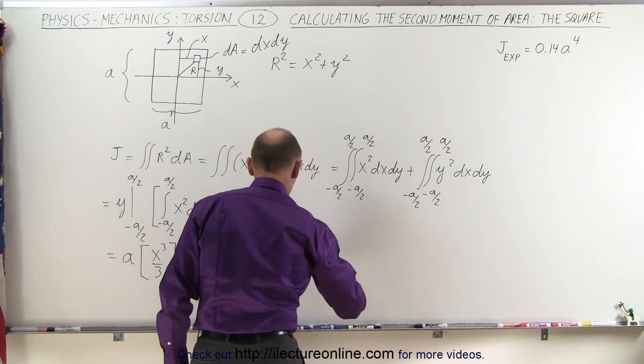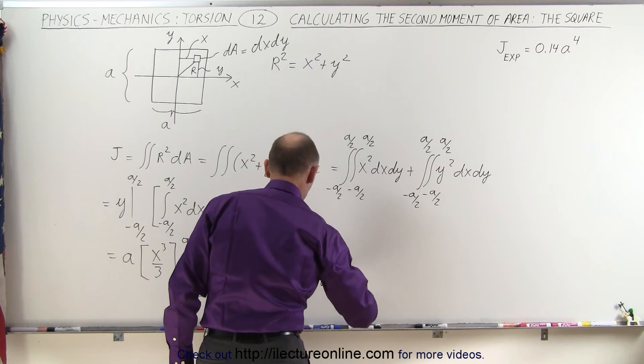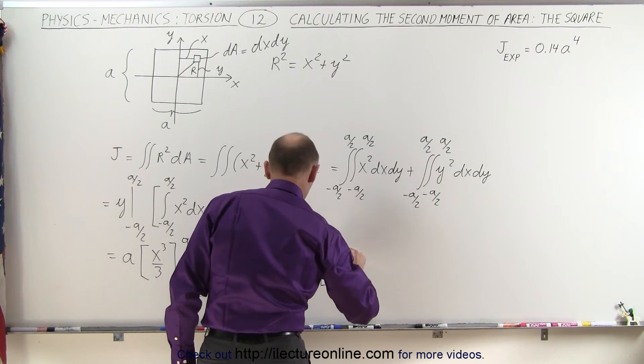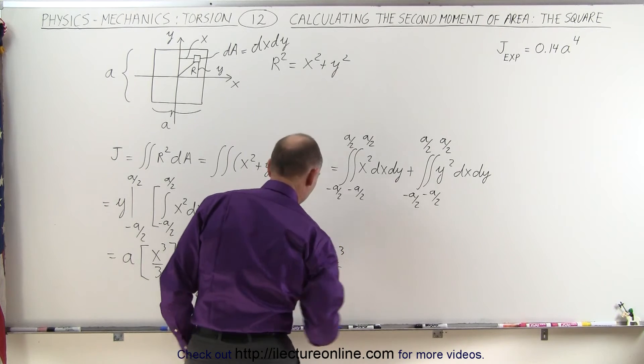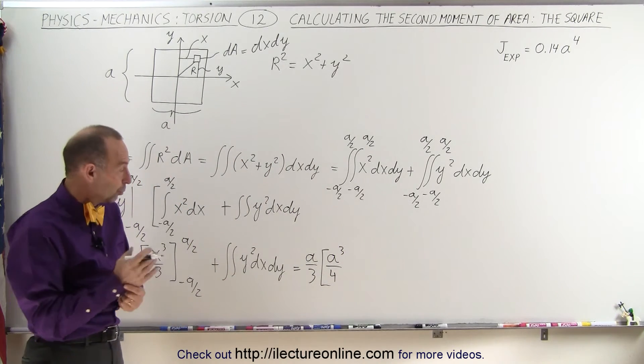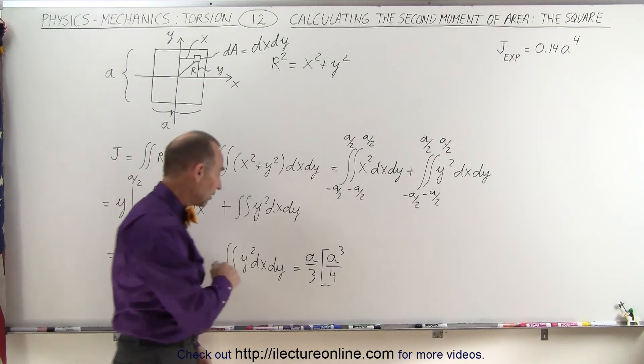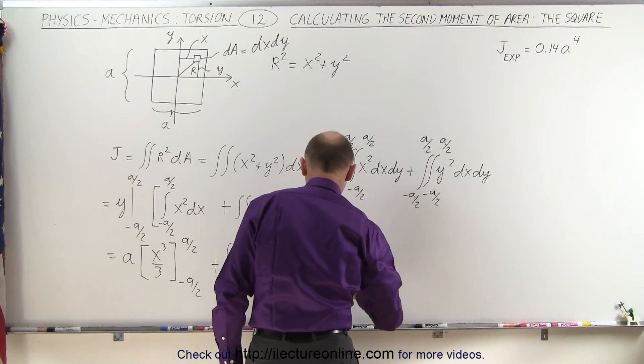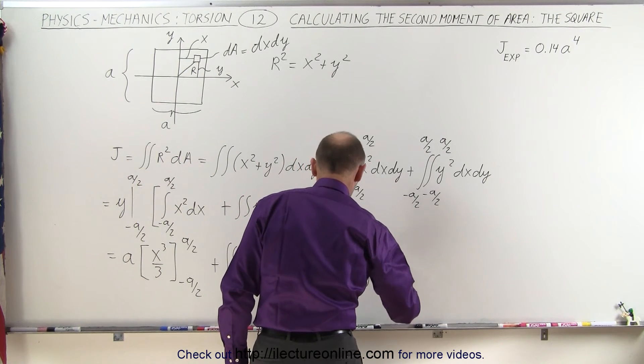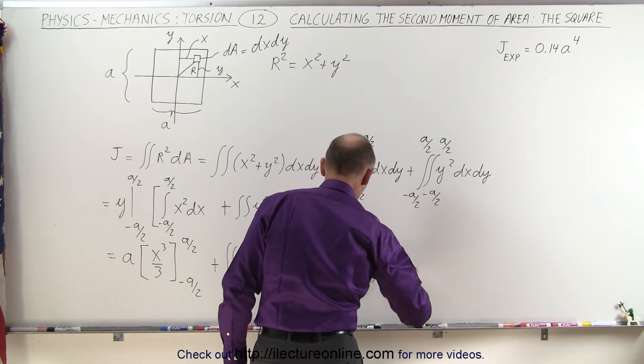first I'll pull out the 3, that would be A over 3 times A cubed over 4, because I'm adding A cubed over 8 plus A cubed over 8, that gives us A cubed over 4, plus the second set of integrals, y squared times dx dy.